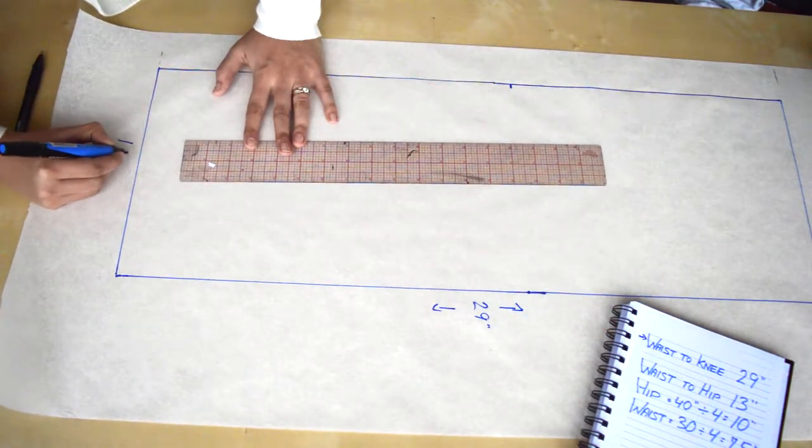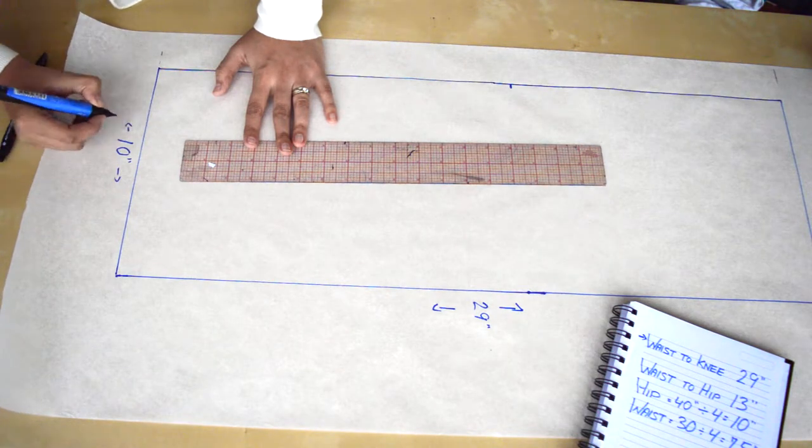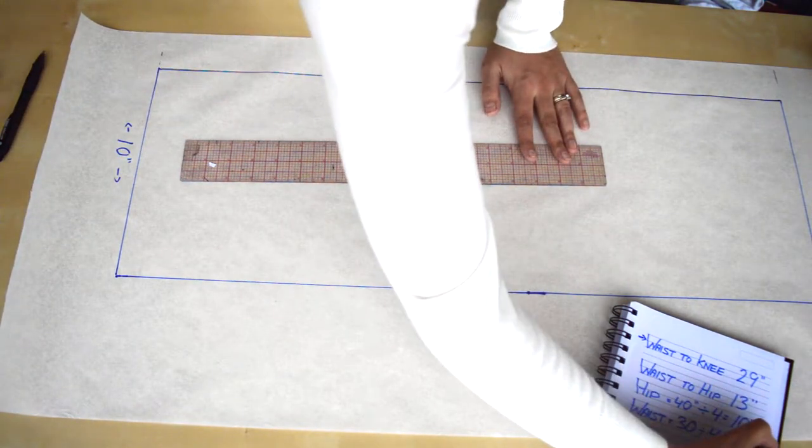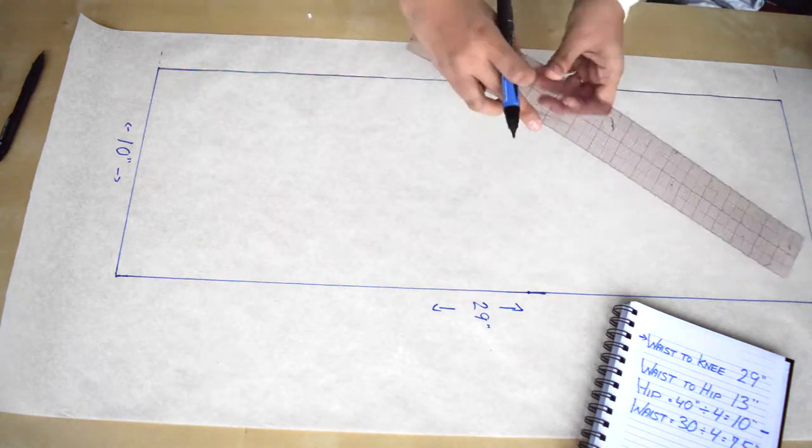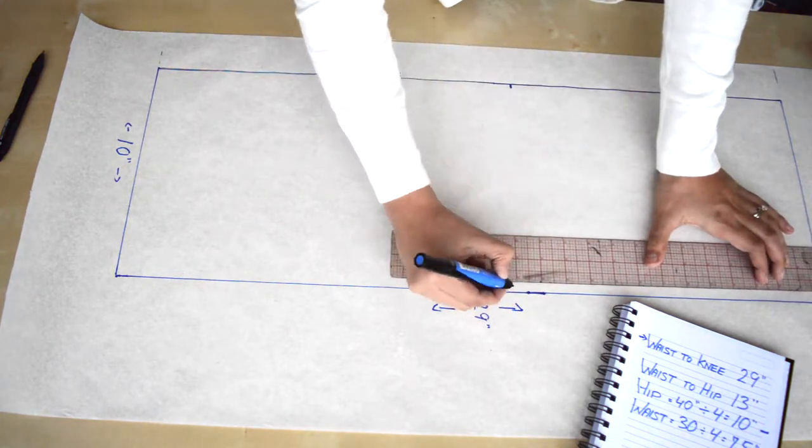After that's done, the next step is to mark my hip line. I'm going to measure down from the top of my pattern 13 inches which is my waist to hip measurement and draw a line straight across.